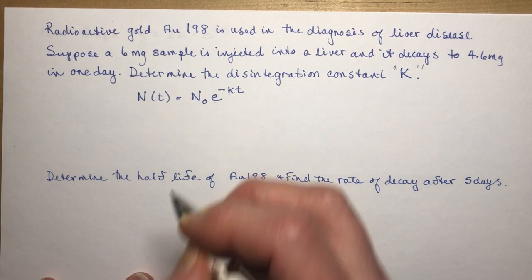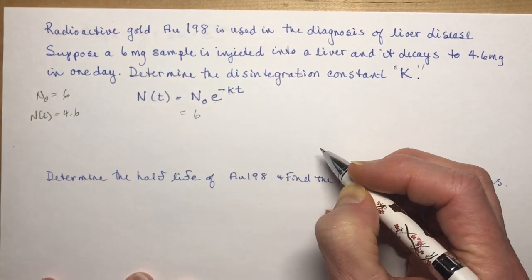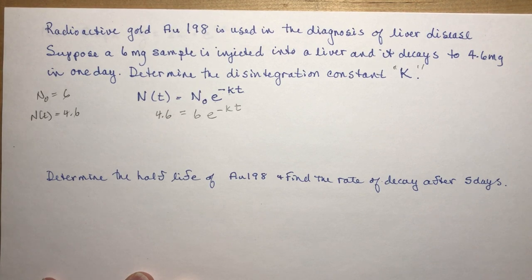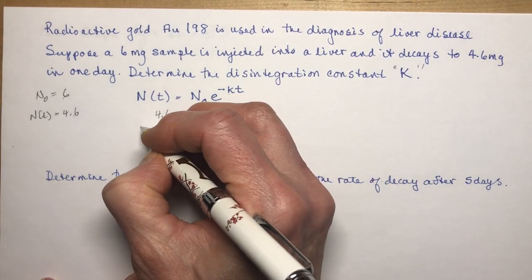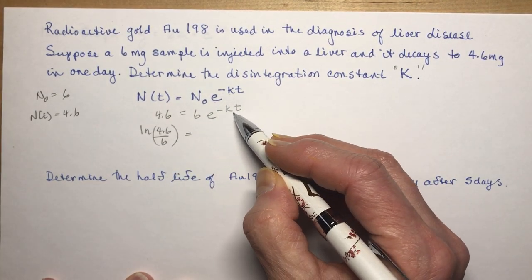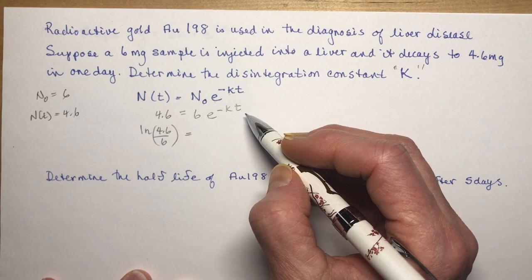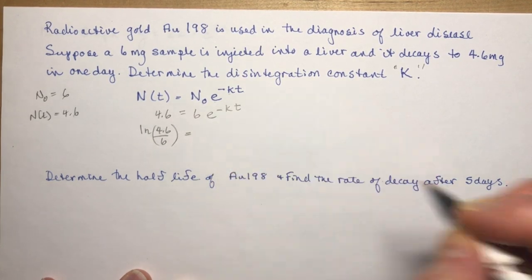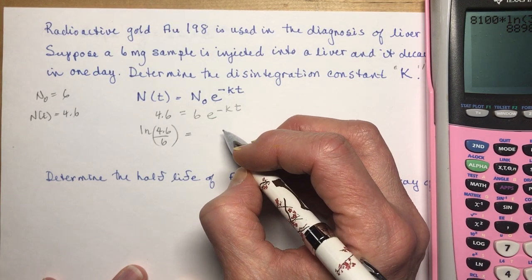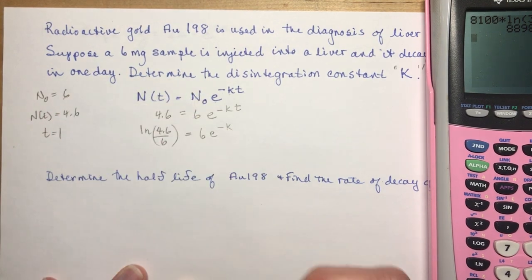Our initial amount N₀ is 6 mg, and N(t) at time T is 4.6. Plugging in: 4.6 = 6 times E to the minus K times 1. Dividing both sides by 6 gives 4.6/6 = E to the minus K. Taking the ln of both sides: ln(4.6/6) = minus K times 1, so ln(4.6/6) = minus KT.